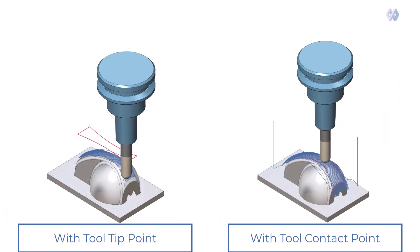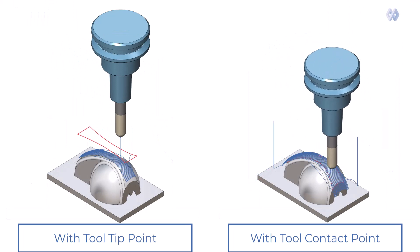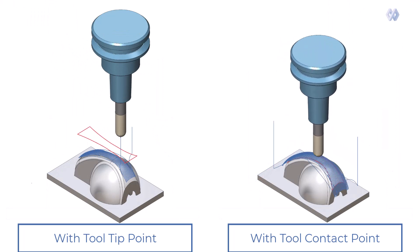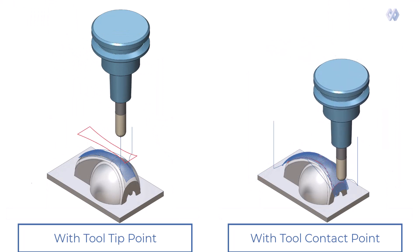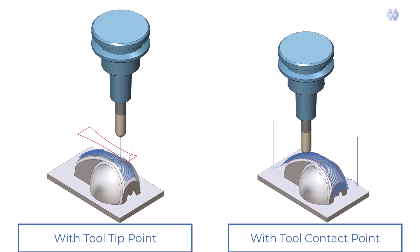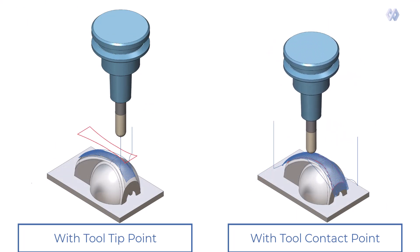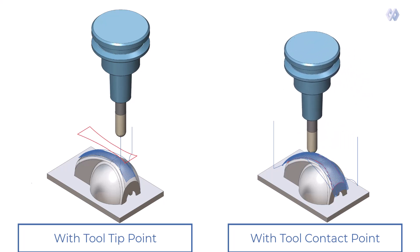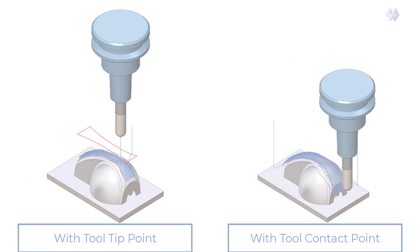The benefits are: users no longer need to recreate the containment or manually add the offsets. The surface within the containment is completely machined.